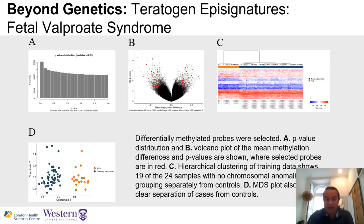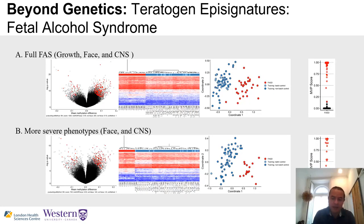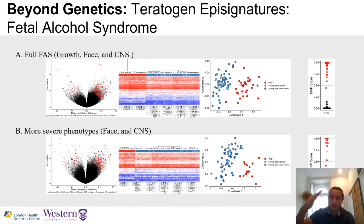Beyond genetics, we've mapped epi-signatures for specific prenatal exposures to teratogens. For fetal valproate syndrome — where valproate given to control seizures during pregnancy leads to syndromic features in about 8% of children — we now have strong evidence of a distinct DNA methylation epi-signature. This is important as a biomarker to avoid unnecessary genetic workup. Similarly, for fetal alcohol syndrome, a third cohort confirms a reproducible DNA methylation signature in the majority of suspected cases, with evidence that the signature segregates patients by severity of clinical features.